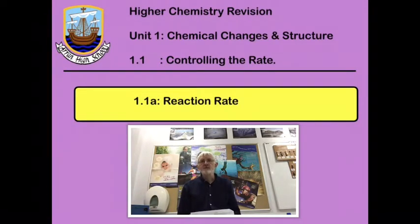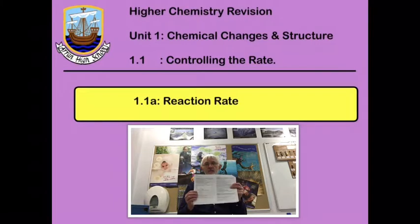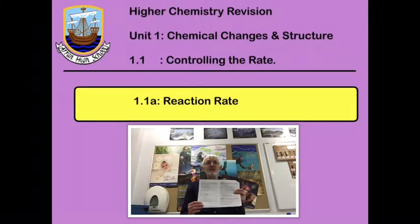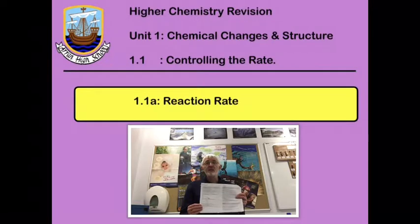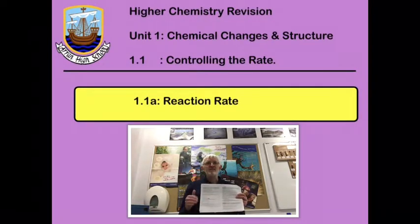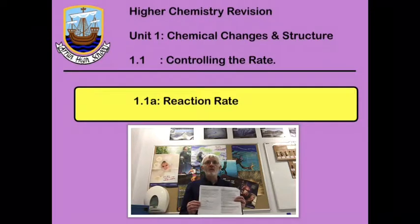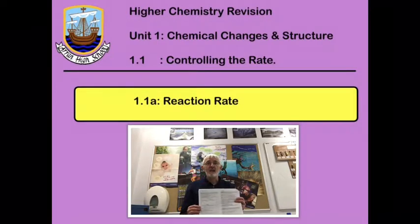In this series of revision lectures I'm going to go through the learning outcomes that I've already given you for each part of the course, trying to exemplify what it is you're expected to know. We'll start by looking at the first part of the course, controlling the rate of reaction, and in this first lecture we're going to look at the learning outcomes for reaction rates.